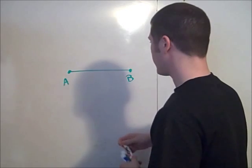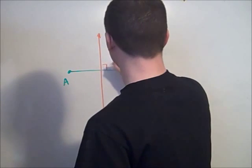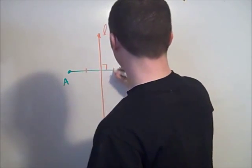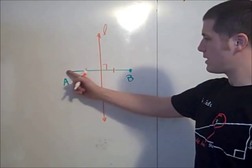So I have the segment AB and I have line L, which is the perpendicular bisector of AB. Then any point on L is equidistant from A and B.